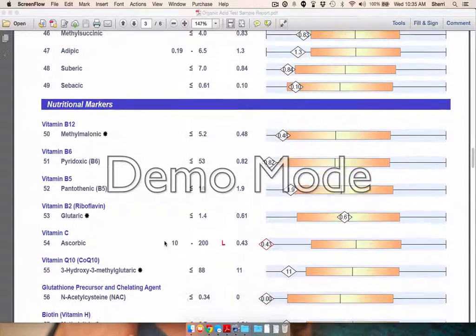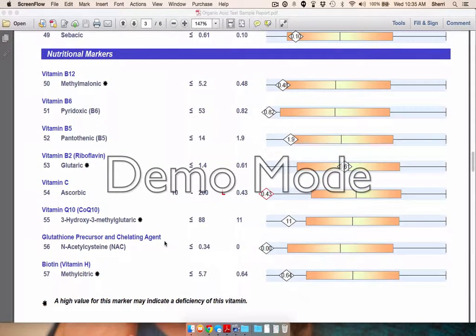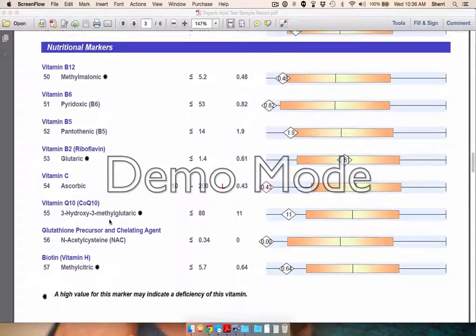And then one of my favorite places here is the nutritional markers. So B12, B6, B5, vitamin C, CoQ10, NAC, all of these nutrients that all of us could look at individually and say, yes, I probably need that. But do we really need it? Not everybody needs all of these nutrients. So it's nice to look at. And again, we can formulate a plan and really get somebody feeling better more quickly when we can target some of these.